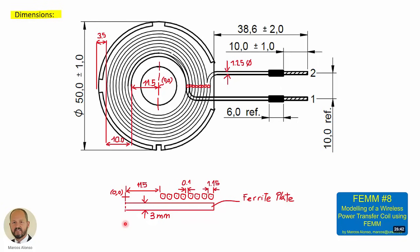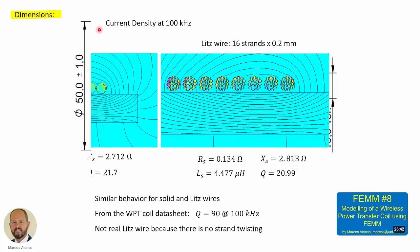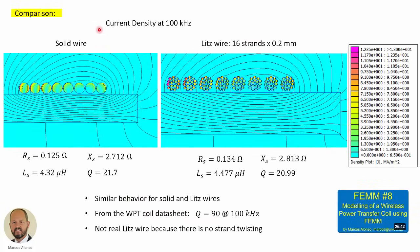To get more information, please watch video FEMM number 8. And here we have some of the results that we obtained in previous video. This is the current density at 100 kHz for the case of solid wire and for the case of what we called Litz wire with 16 strands and 0.2 mm diameter.